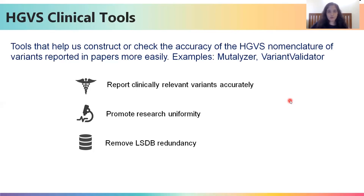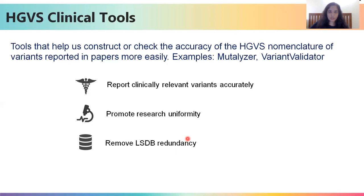Well-annotated databases — known as LSDBs or locus-specific databases — form the backbone of a lot of bioinformatics analysis. Examples include ClinVar, LOVD, and IGIB's own Dahlia and Mustard databases. When annotating these databases, we need to remove all redundancy so that all entries are unique. The only way to ensure accurate and unique variants are present is to attach unique IDs in the form of HGVS notation, which can be done using the batch functionality of these tools to convert large numbers of variants into proper HGVS notation in a single go.